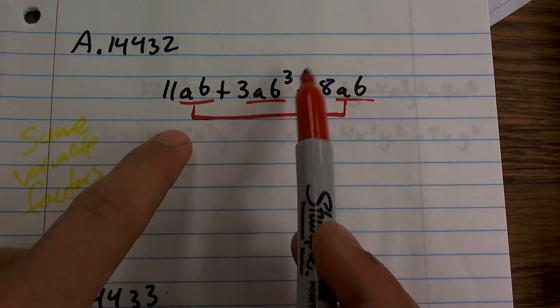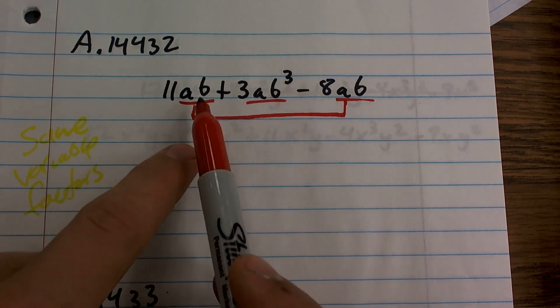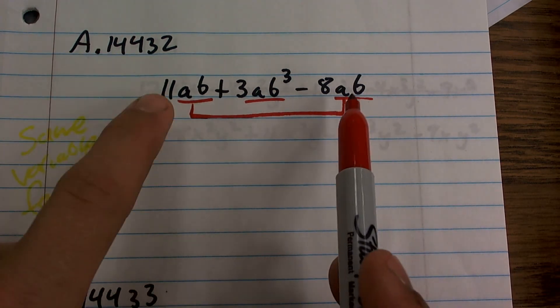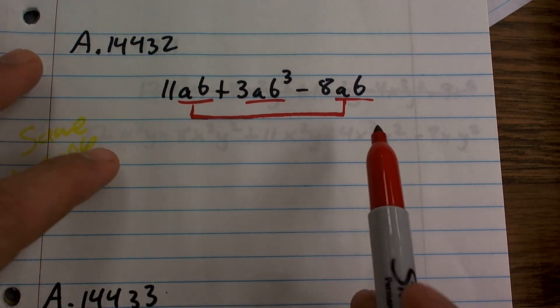Here is AB but that's B cubed. That is not the same as B. So therefore I can only combine these two. So what I'm going to do is I'm just going to combine them.